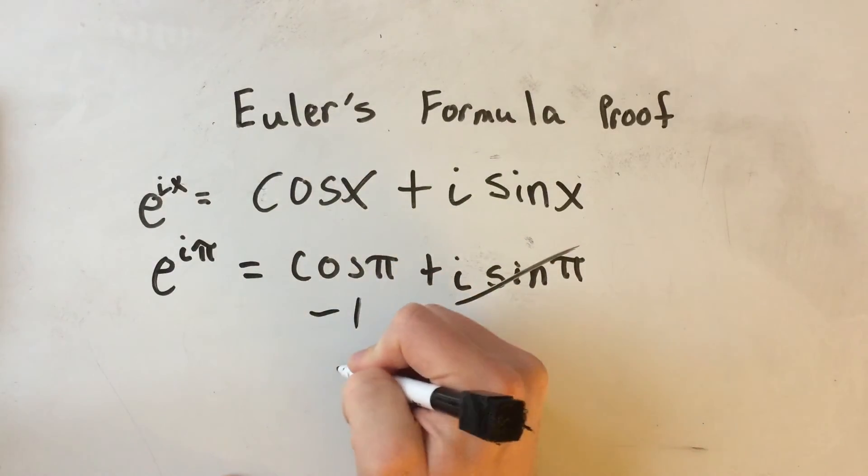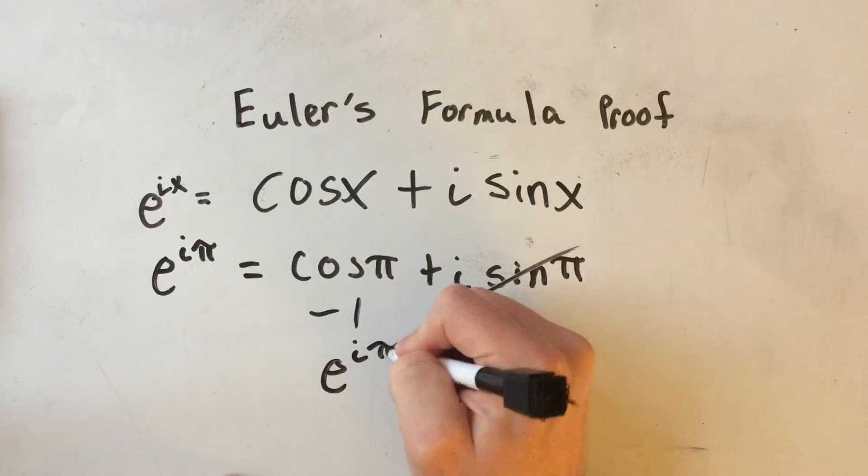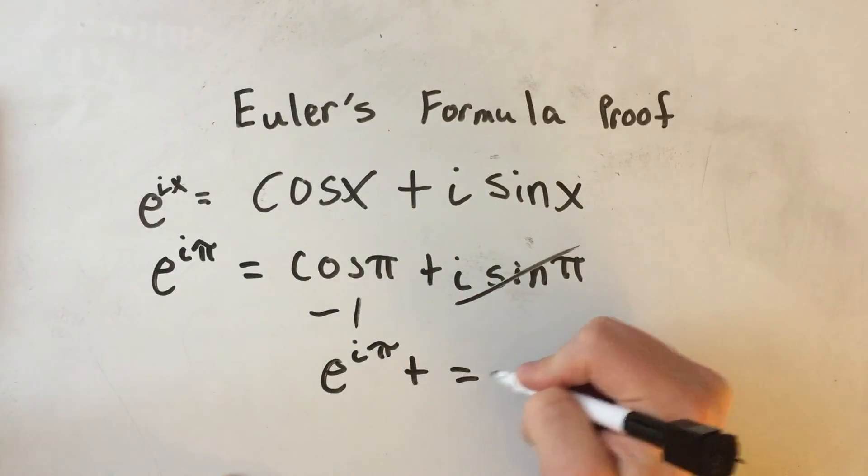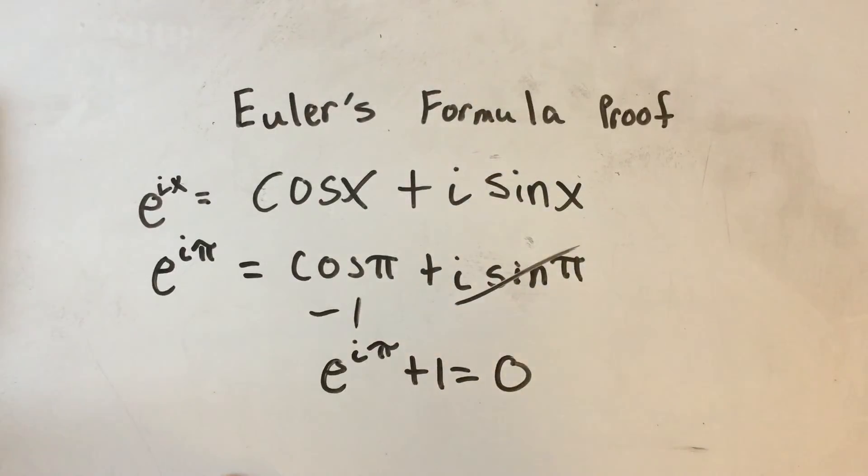And if I add that negative one to the other side, that would be e to the i pi plus one is equal to zero. One of the most famous identities in all mathematics. It uses the five most important constants in math: e, i, pi, one, and zero, all in one nice neat little equation. What more could you ask for?